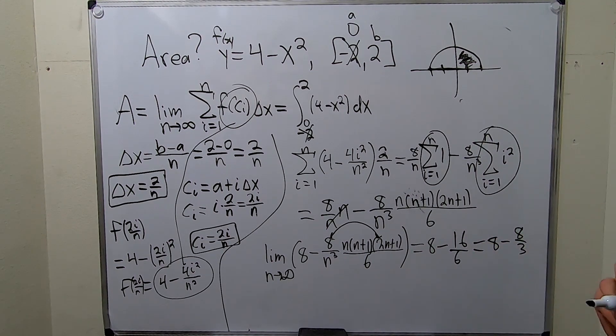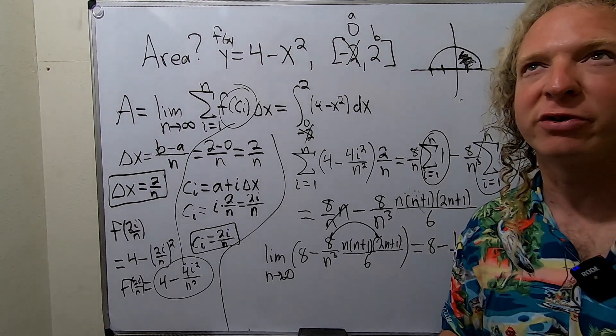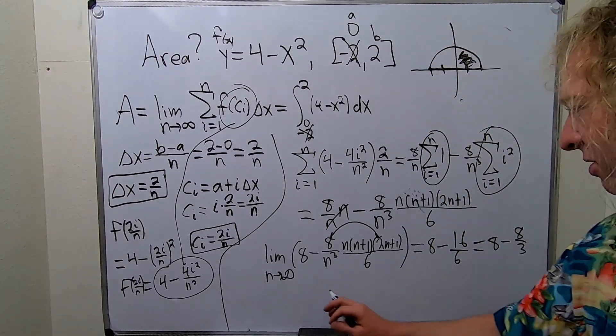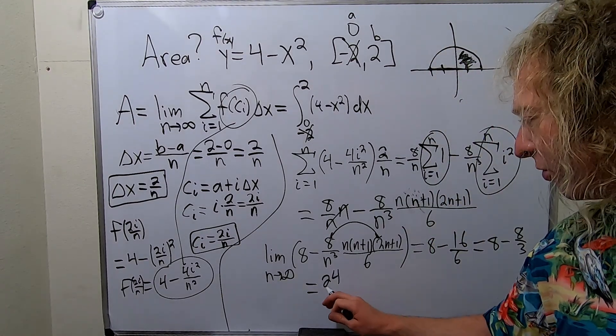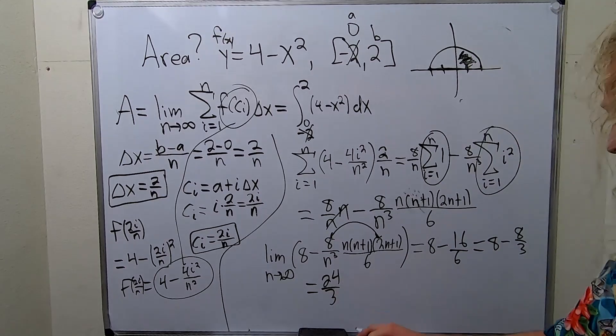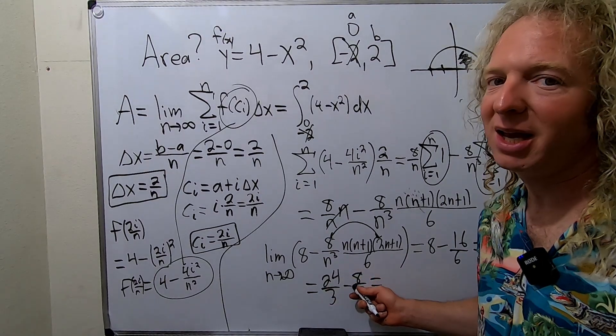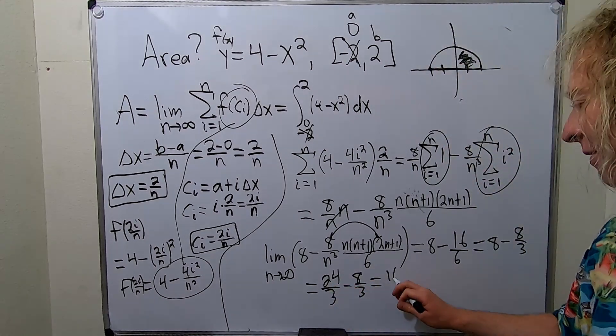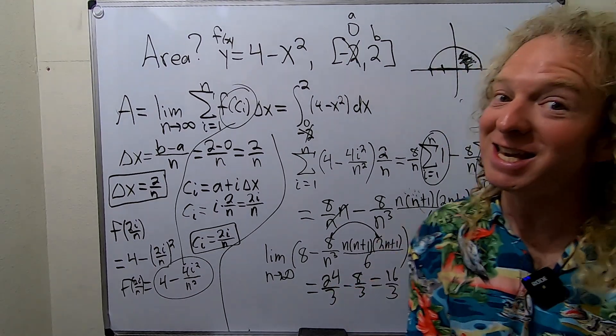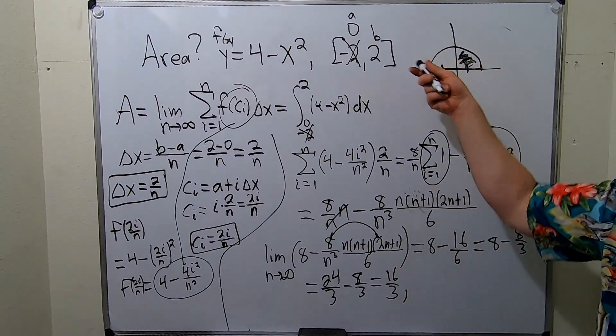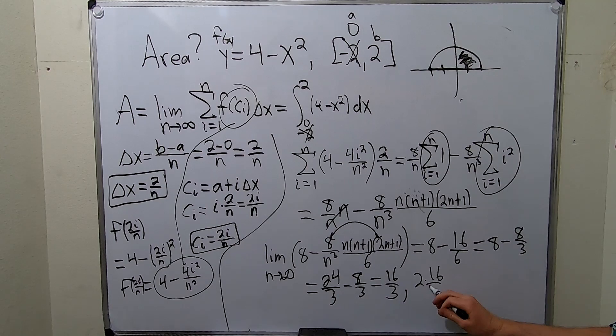Okay, but that's not the final answer. Let's go ahead and combine these. 8, how do you write 8 as a number over 3? Wouldn't that be 24 over 3? Yeah, because 3 times 8 is 24. So this is equal to 24 over 3. Yeah, because that's the same as 8 minus 8 over 3. And then 24 minus 8 is 16. But that's not the answer, because we have to multiply it by 2. So because we only found half the area, 2 times that would give us 32 over 3.